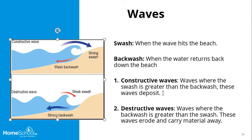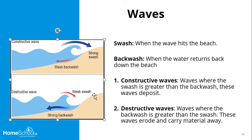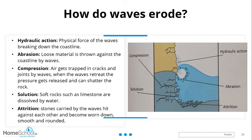A destructive wave is where the backwash is greater than the swash. A weak swash hits the beach and over thousands of years continuously erodes the beach, cliff, or coastline. A strong backwash then carries the broken-down material away back out to sea. So: a constructive wave has a strong swash and weak backwash — material gets deposited and stays. A destructive wave has a weak swash and strong backwash — eroded material gets dragged away.